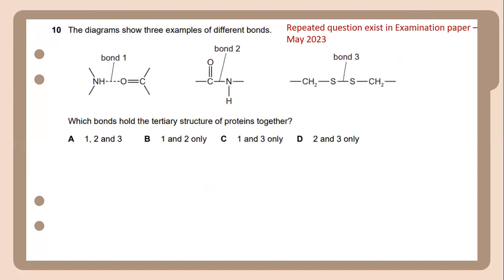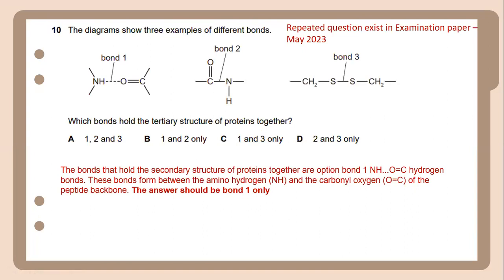Number 10 is also a repeated question which exists in examination papers for May 2023. The diagram shows three examples of different bonds. Which bonds hold the secondary structure of protein together? The bonds that hold the secondary structure of protein together are bond 1. And this bond forms between the amino hydrogen and the carbonyl oxygen of the peptide backbone. The answer should be bond 1 only.